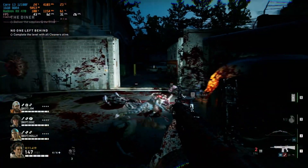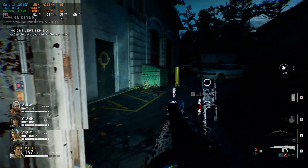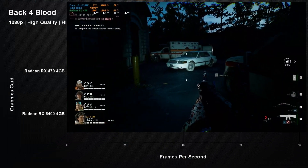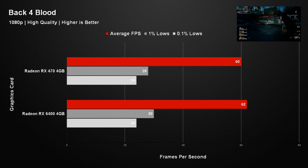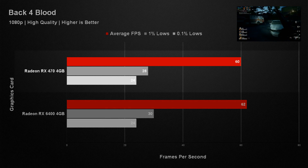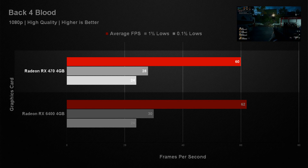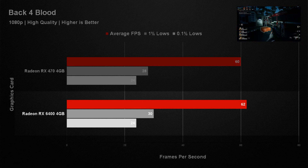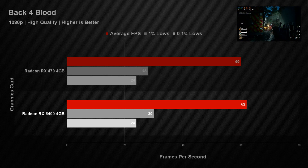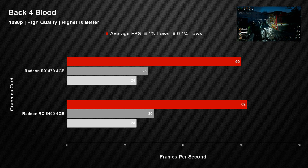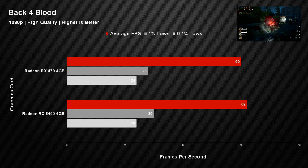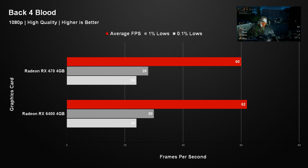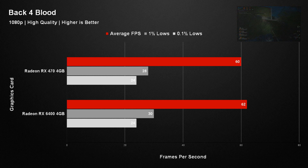Both cards came very close in terms of performance in Back 4 Blood. Running at 1080p with a high preset, the RX 470 managed to average 60 frames per second, with the RX 6400 only just beating it with 62. This is within tolerance of the test, so we can pretty much class this as a draw, and things don't change much from here.